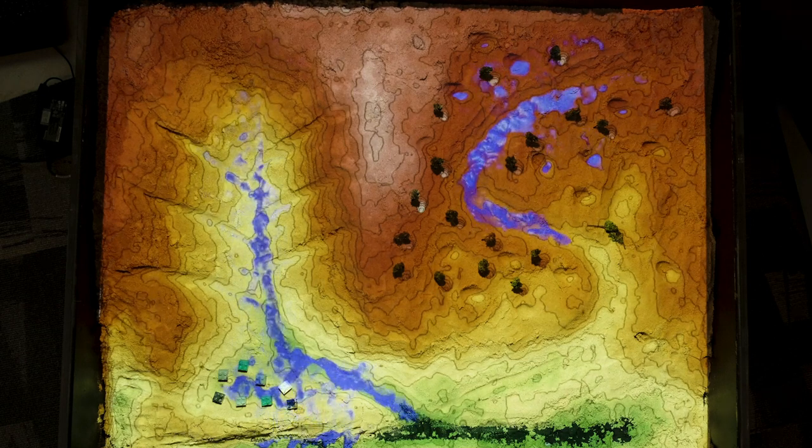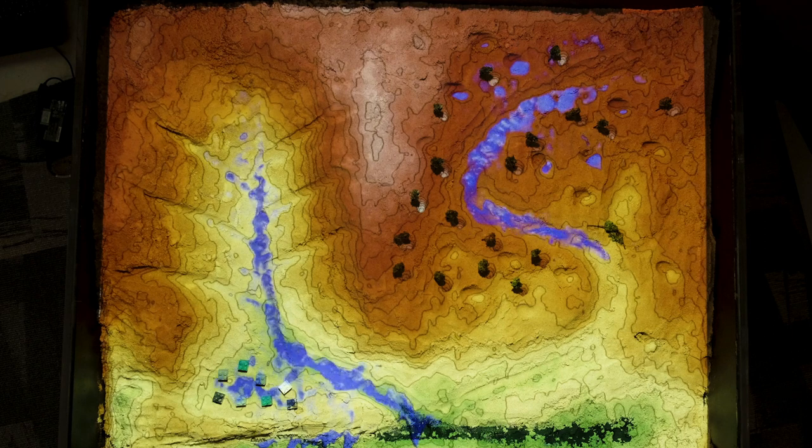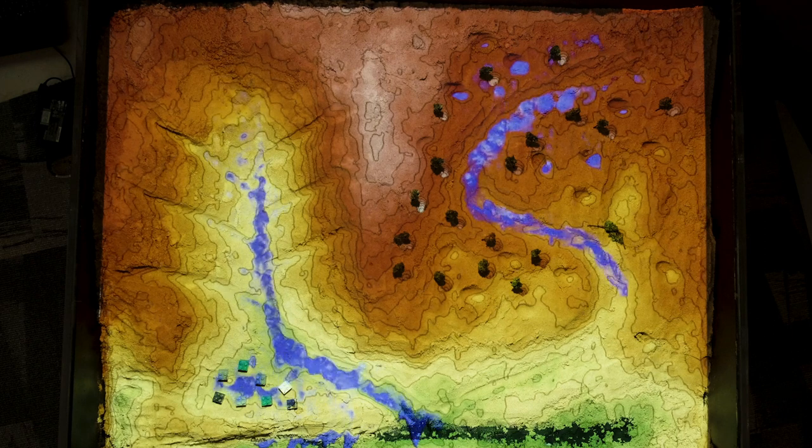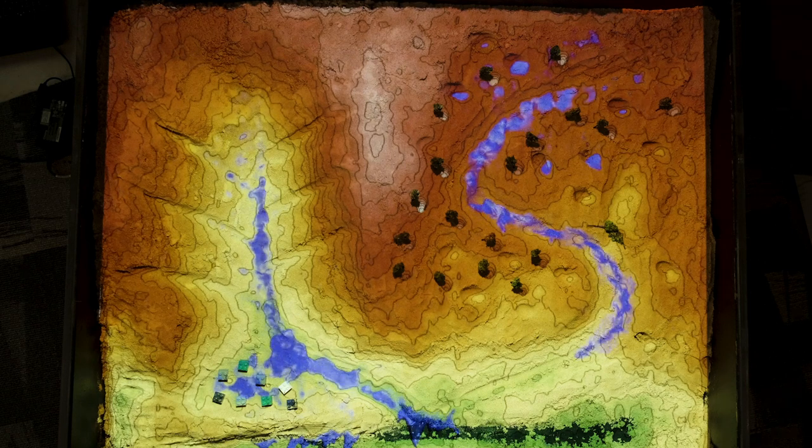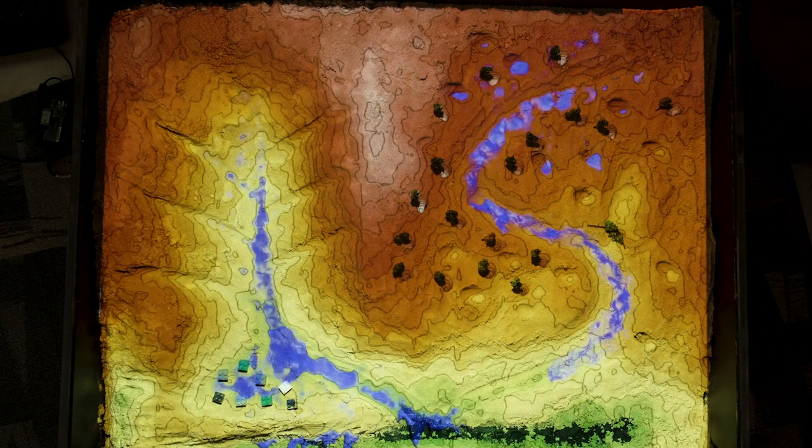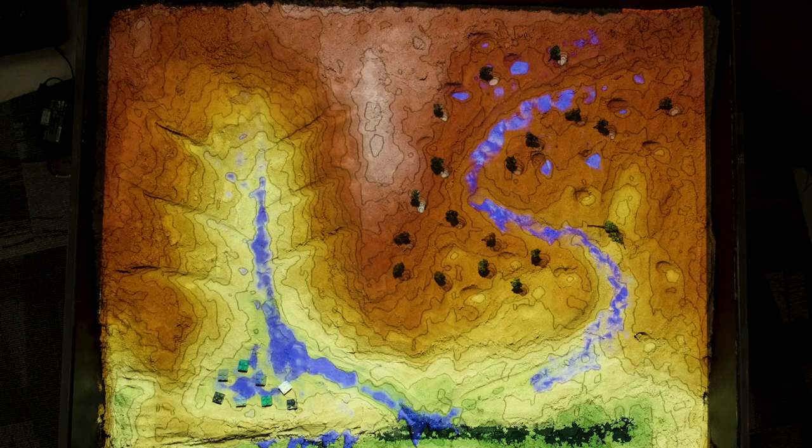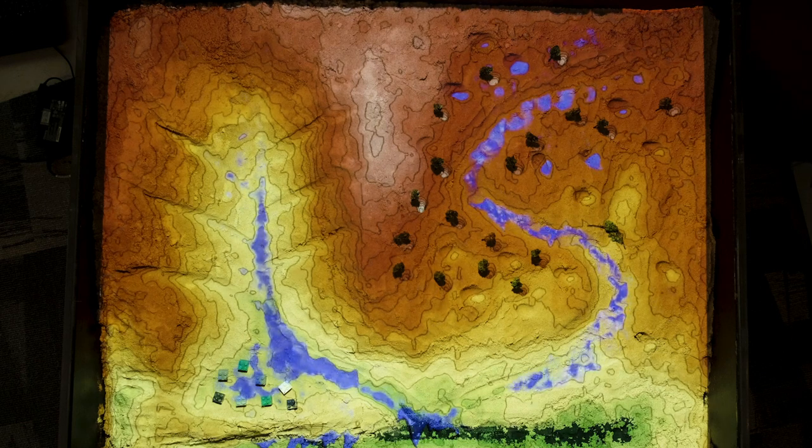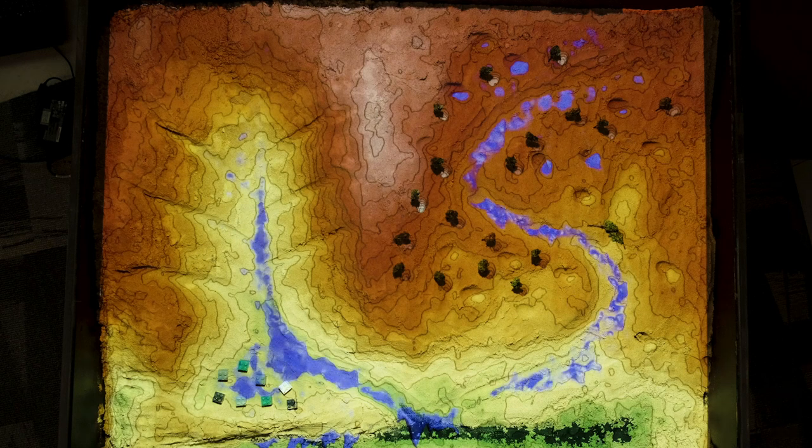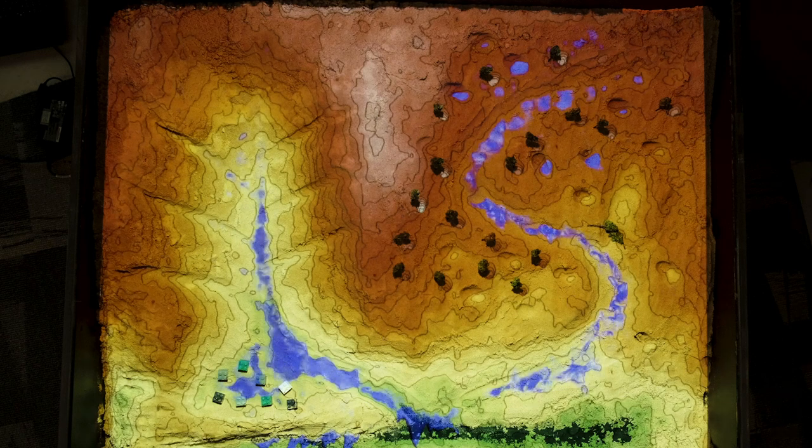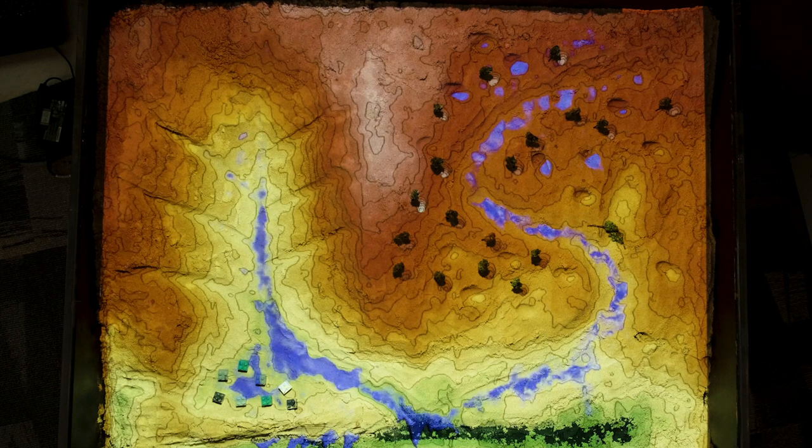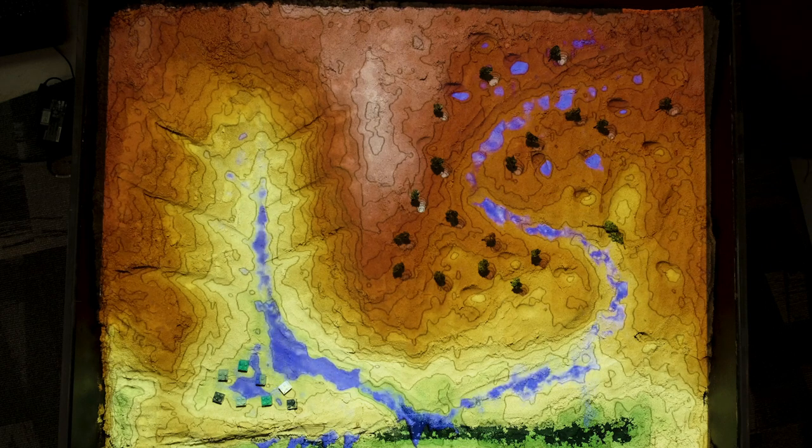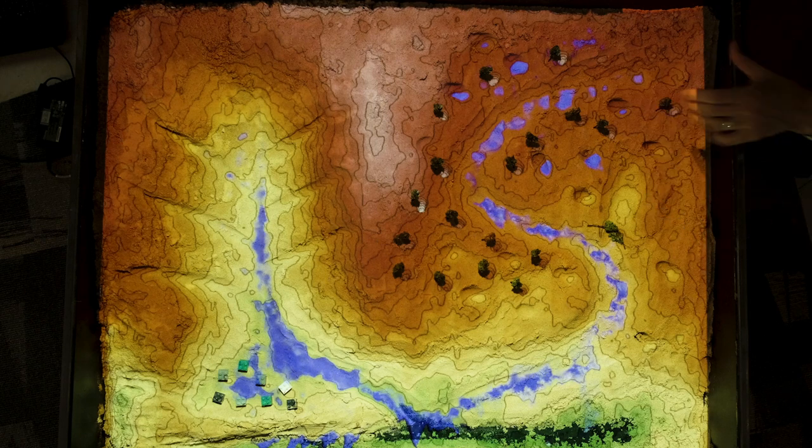In the more naturalized catchment with the meandering channel the water is taking a lot longer to reach the bottom, and that is because the gradient of the channel is a lot shallower because it has got further to travel. We can also see that in the more naturalized catchment there is quite a lot of water that is staying up in the catchment and is being stored by some of the little features that we talked about earlier.